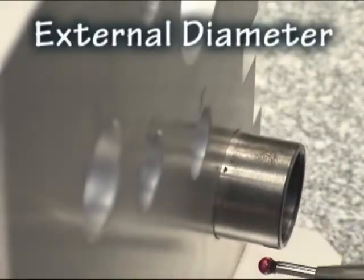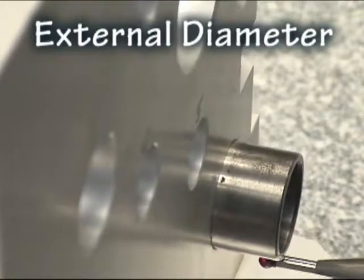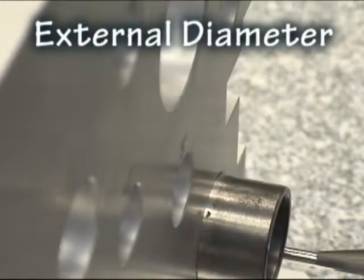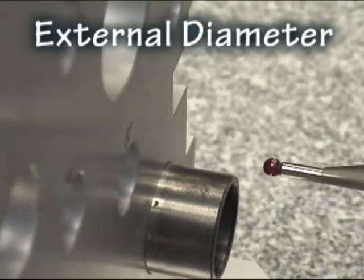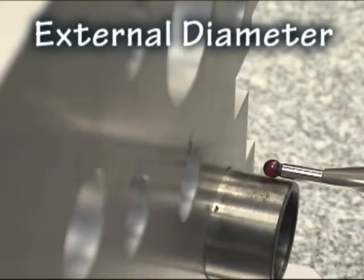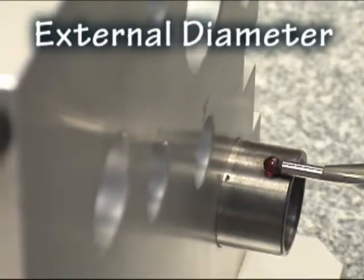External diameters are also as simple to do. Simply sweep the low point of the external. Come up. Sweep the high point. And the diameter will be locked in.